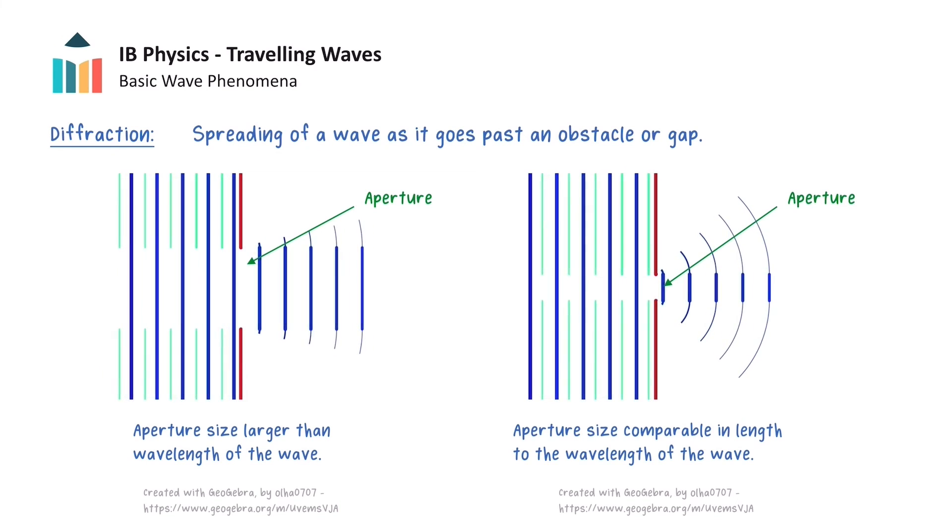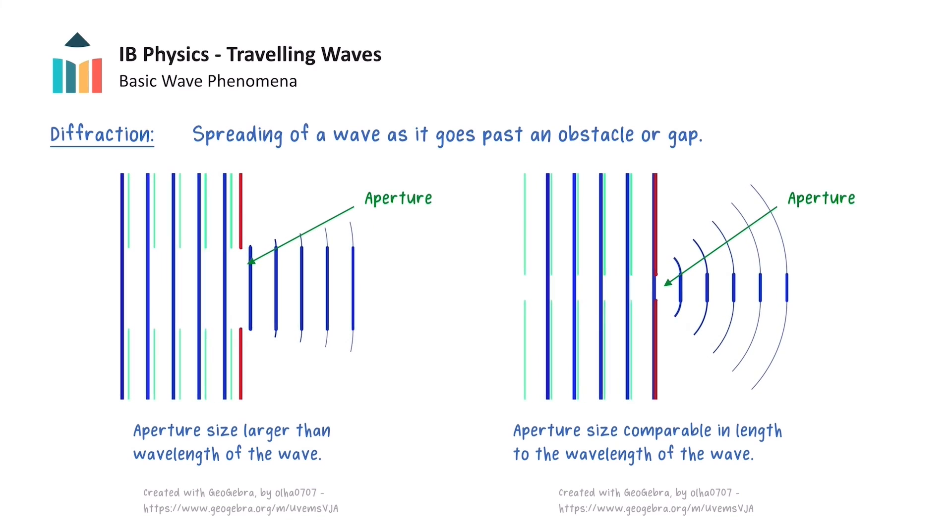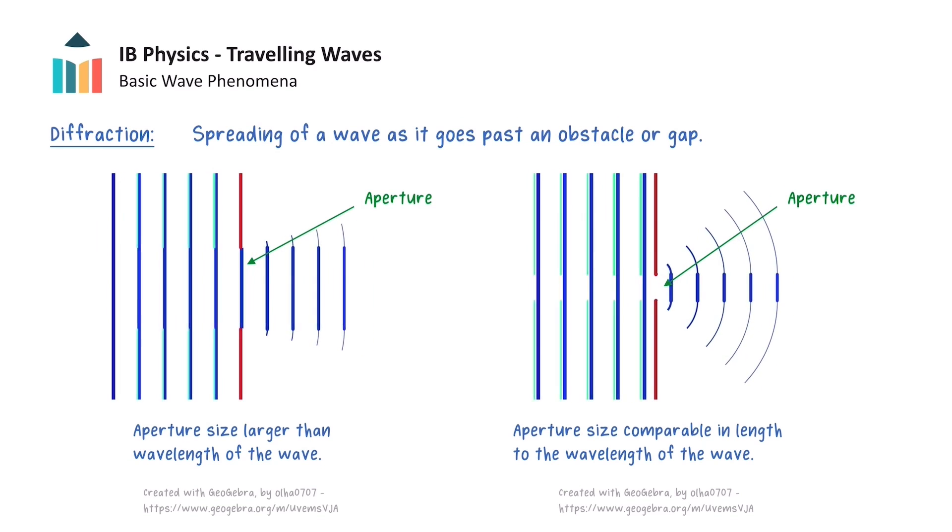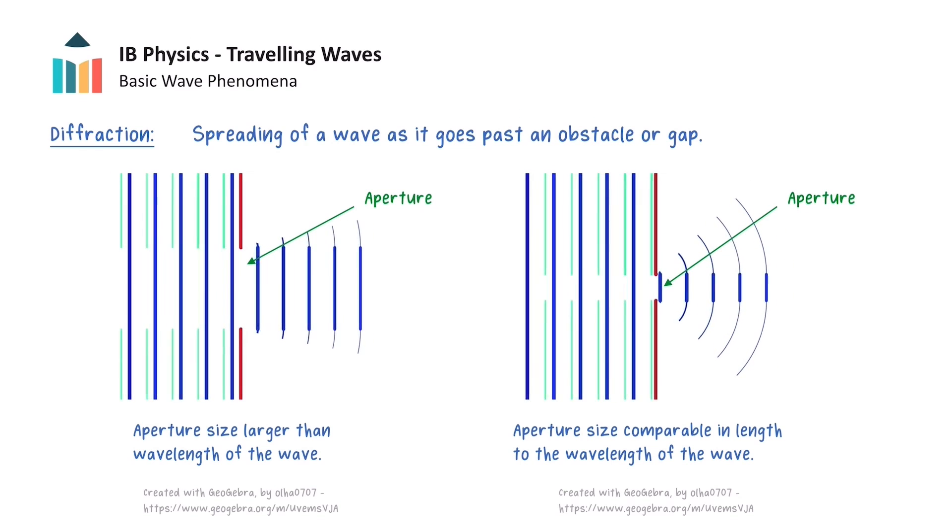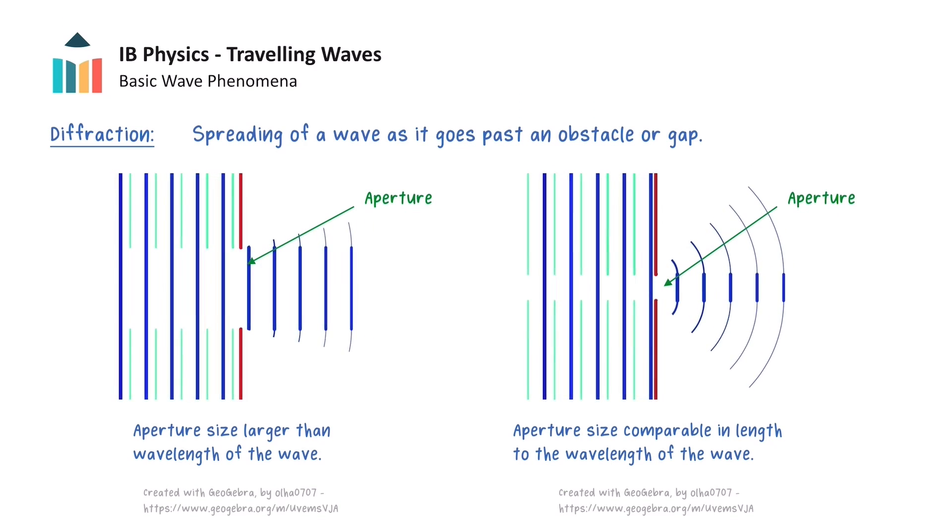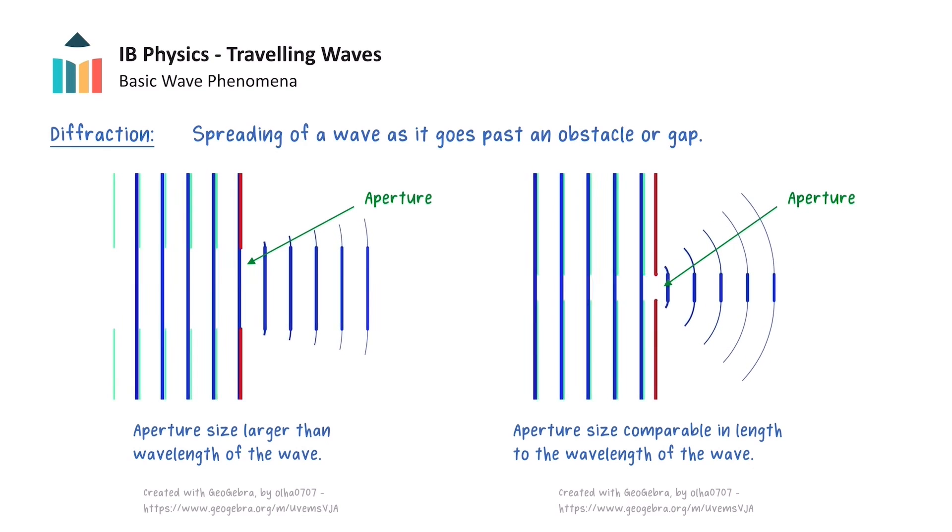However, as the width of the aperture becomes comparable in length to the wavelength of the wave, the diffraction is greater and the wavefronts become more circular. Another property of diffraction is that the frequency, wavelength and speed of the waves all remain constant after diffraction.